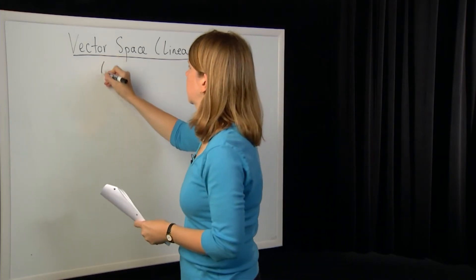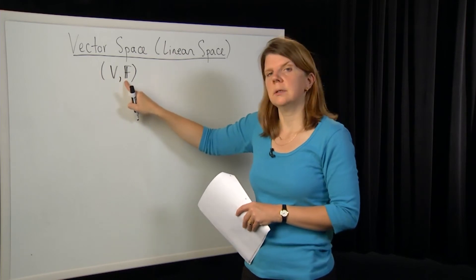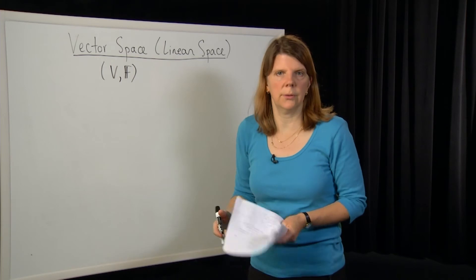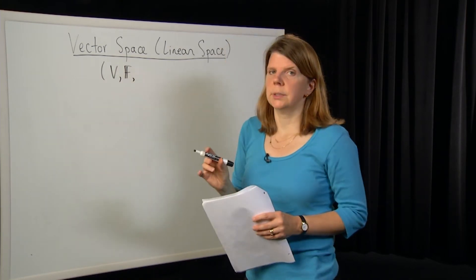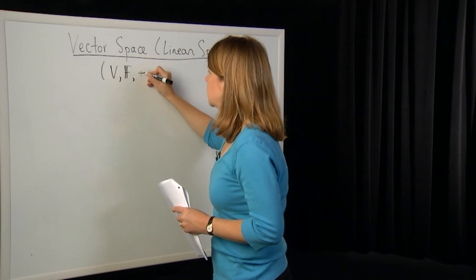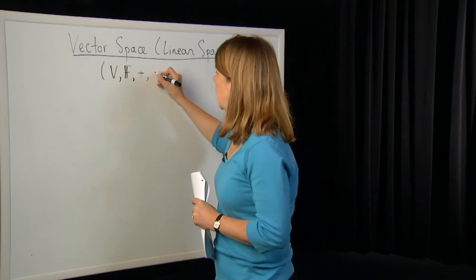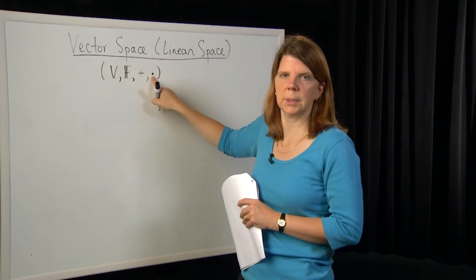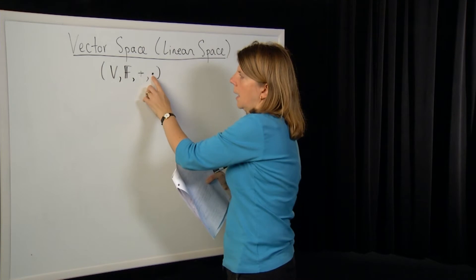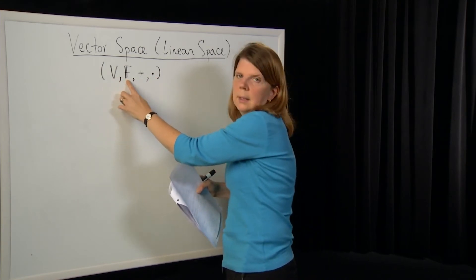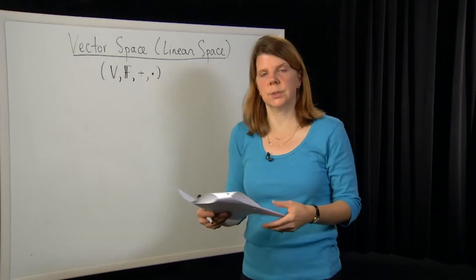We use the terminology vector space and linear space interchangeably. We define a vector space V over field F as a set of elements V — which we'll call vectors — and an associated field F satisfying all the field properties. Associated with that, we have two operations: a plus, which now means vector addition, and a dot, which means scalar multiplication. The plus applies to two vectors to produce another vector; the multiplication takes a vector and multiplies by an element of the field — loosely called a scalar.